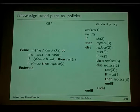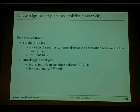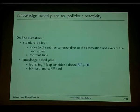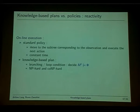The standard policy is less easy to read, less easy to generate, and much less compact — a positive point for knowledge-based programming. The price to pay is reactivity. Executing a standard policy is cheap in terms of online time: finding the next action once an observation is received can always be done in constant time. But for a knowledge-based plan, evaluating a branching condition requires deciding whether the current knowledge state implies the condition — a validity test in S5, a consequence test in S5, which is NP-hard and co-NP-hard.